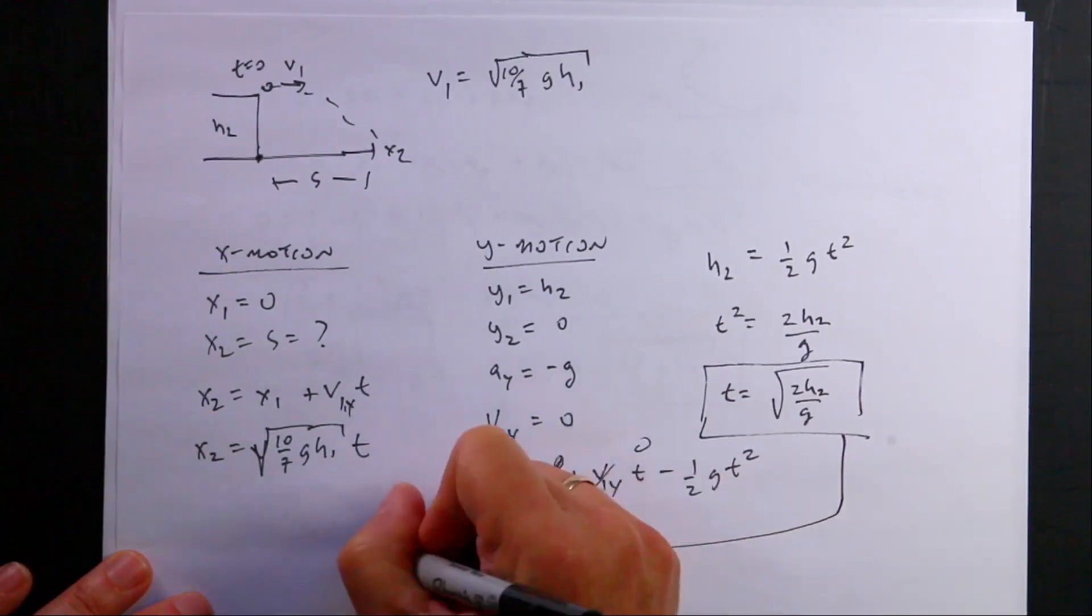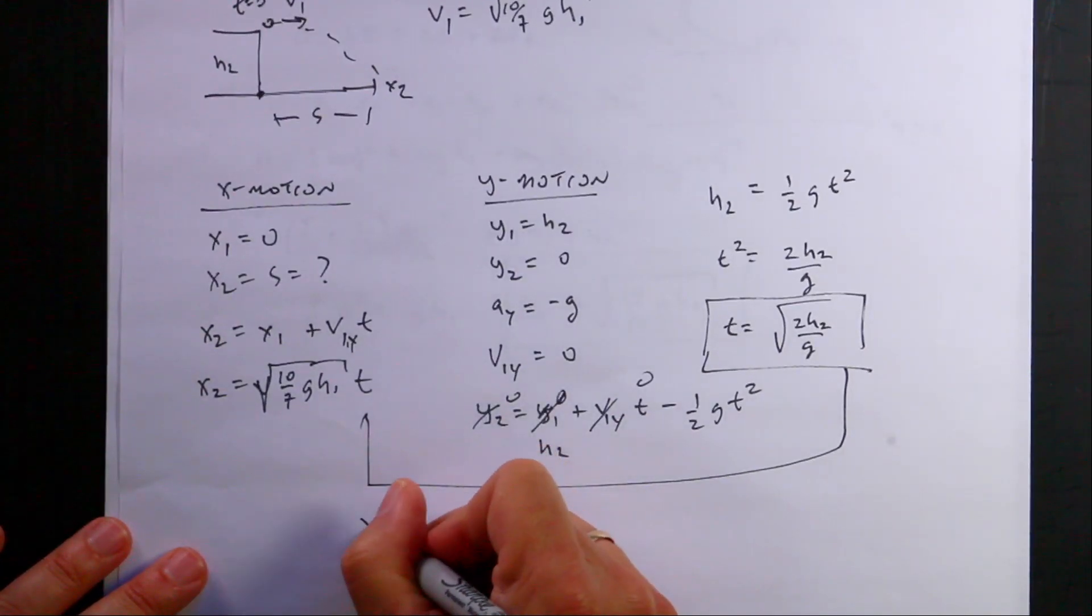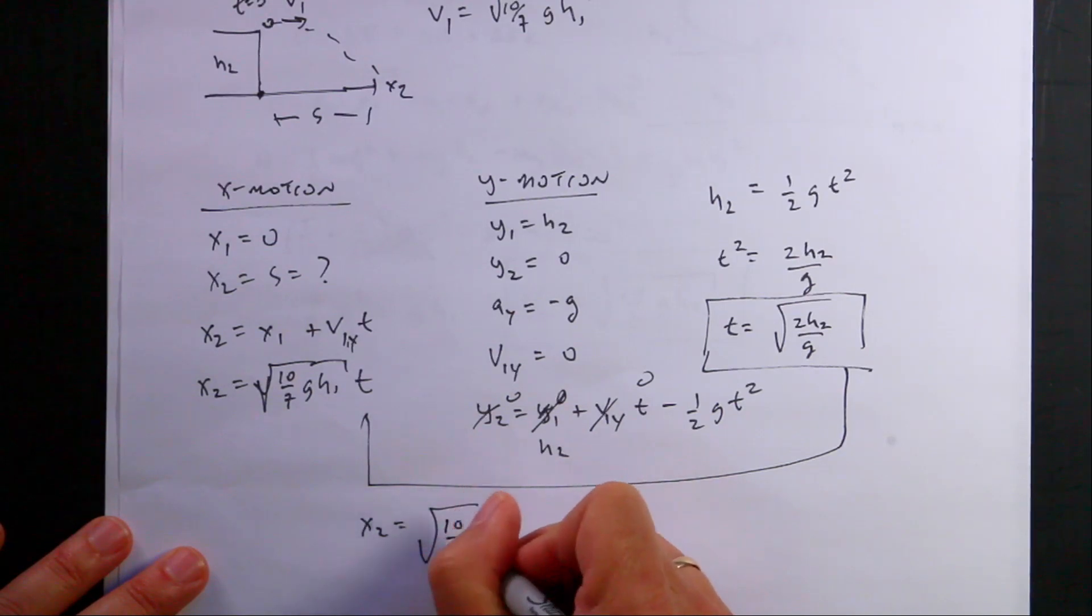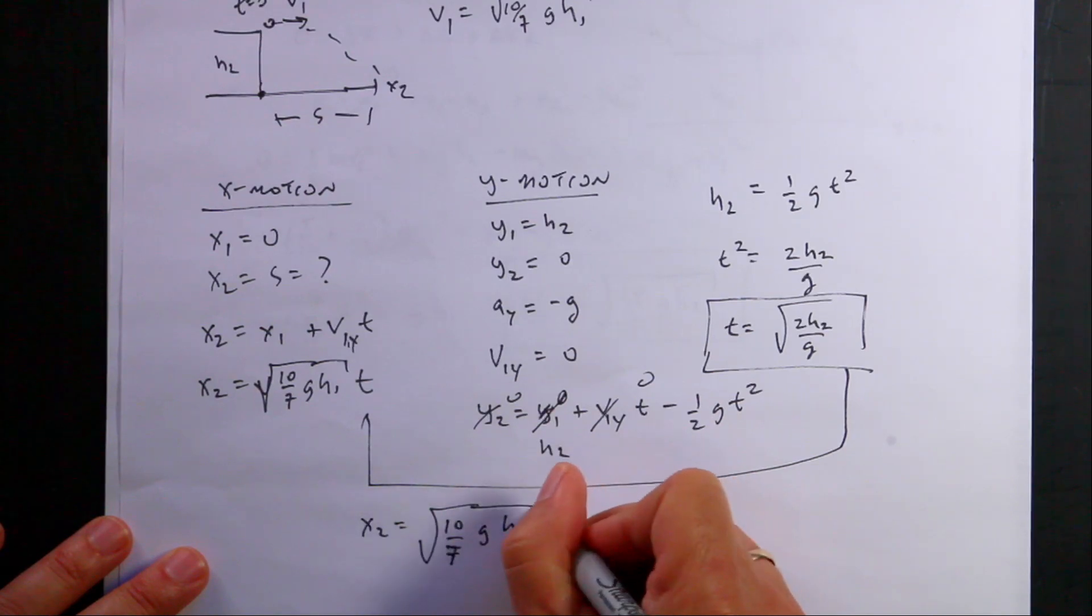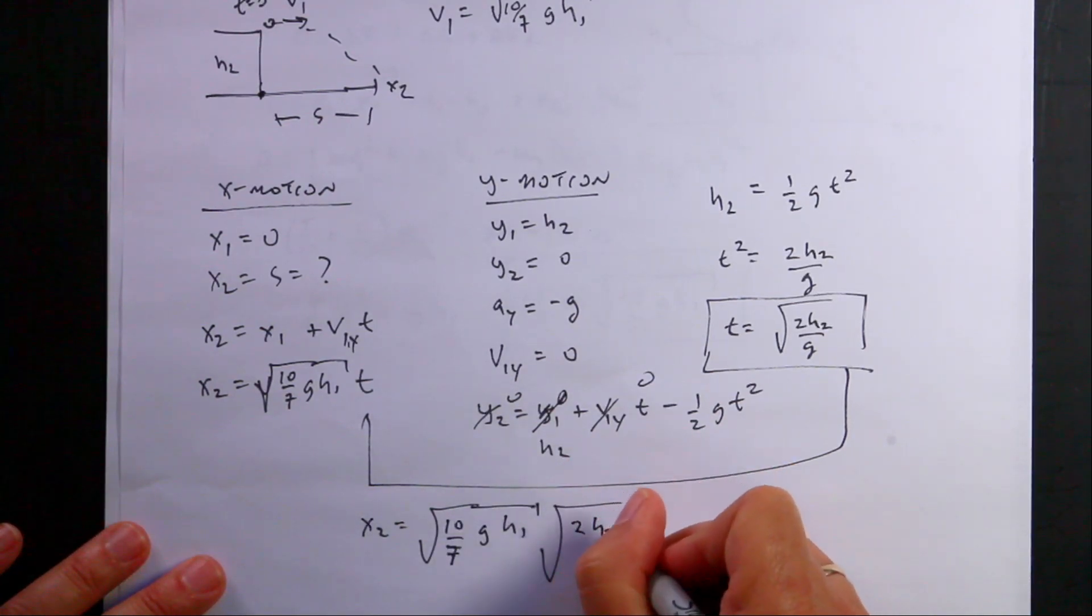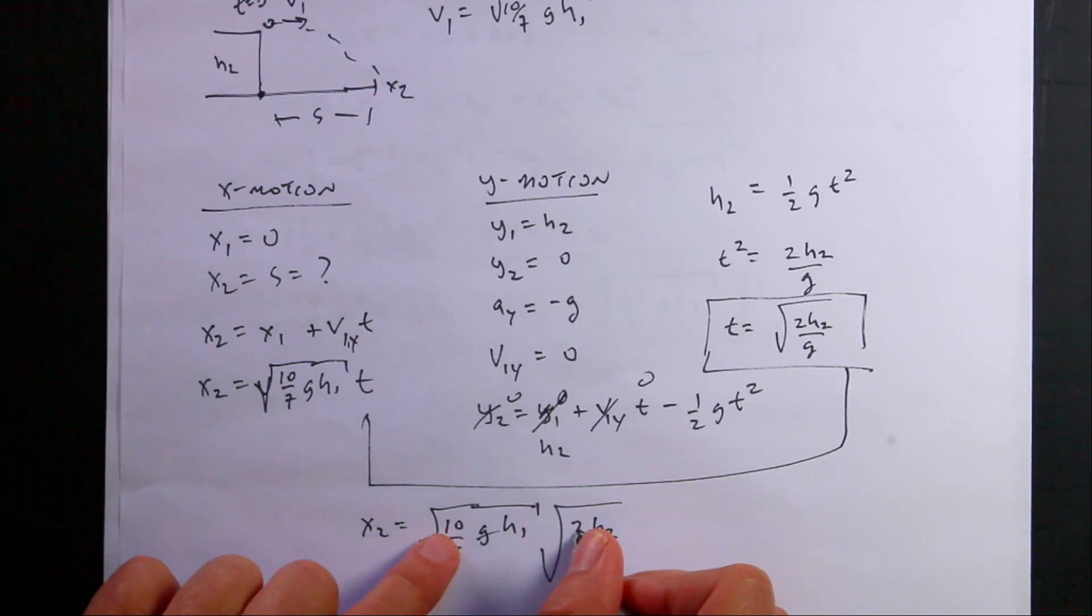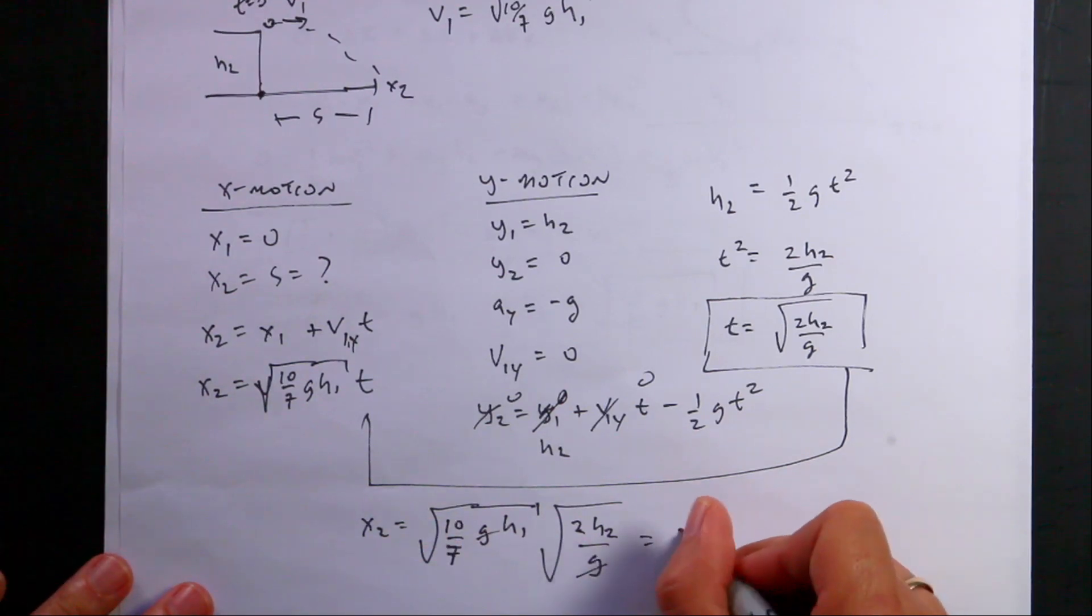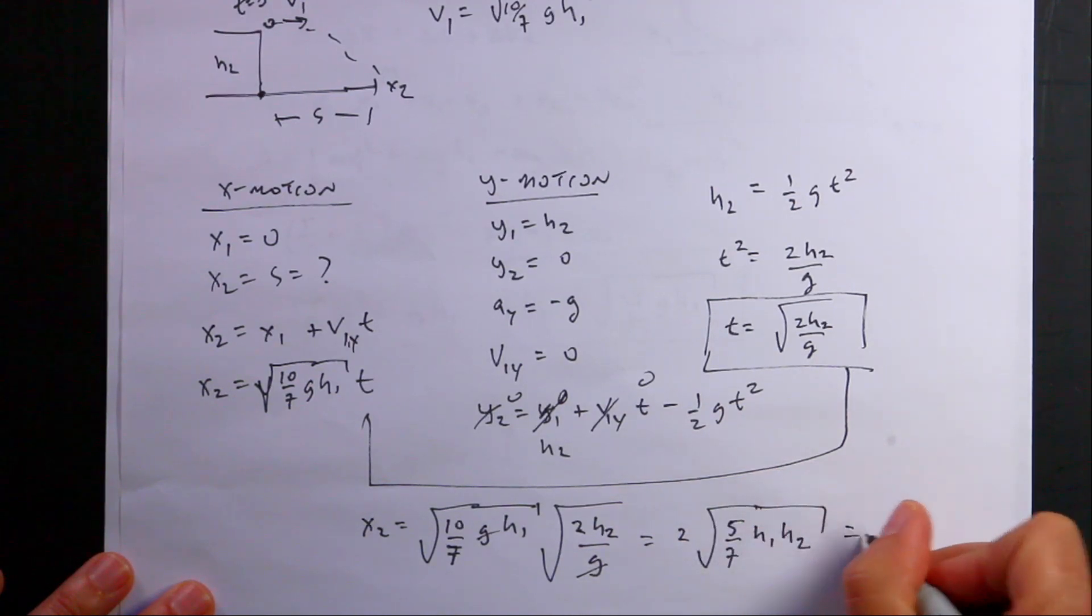Now I can take this and put it in right there. And if I do that, I get x2 is the square root of 10 over 7 g h1 times the square root of 2 h2 over g. Since these are both in the square root, those cancel. I can factor out a 2 and a 2 there, and I get 2 times the square root of 5 over 7 h1 h2, and that is my s value.